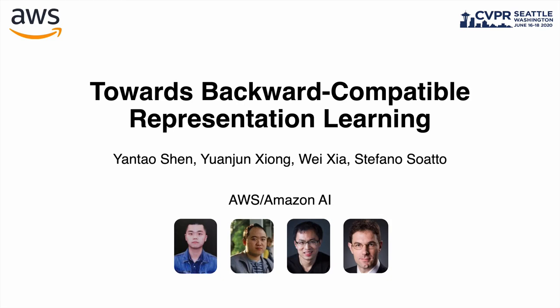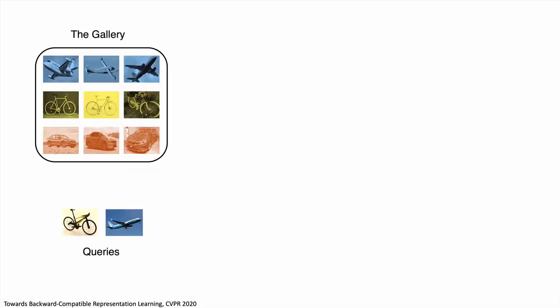I'm Yuan Jun from AWS AI. I will describe a method for backward-compatible representation learning.